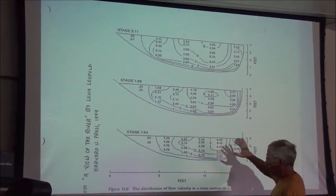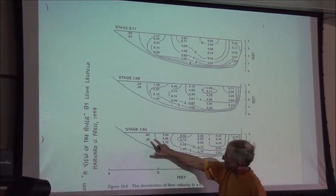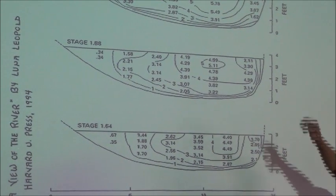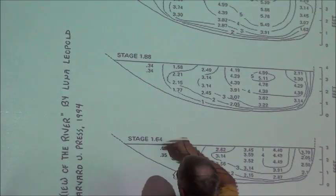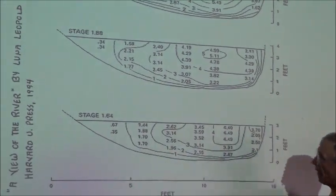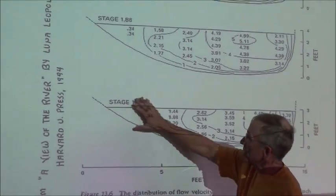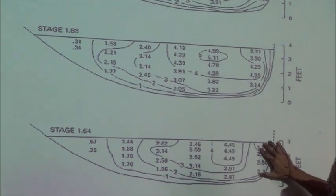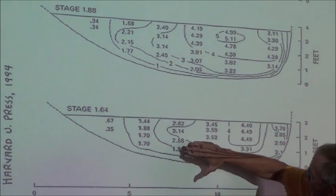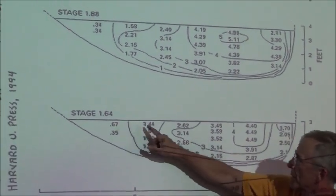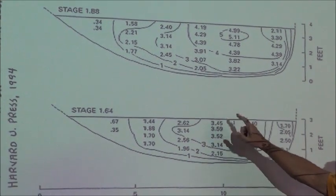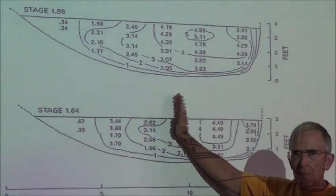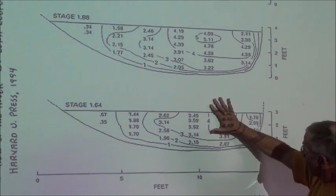You see a bunch of numbers representing water velocities actually measured in the stream at each location. There were two locations in the shallow area and more locations in the deeper parts. The numbers tend to be smaller — smaller velocities — near one bank. In the middle, going down, it goes from 0.67 to 1.44, 2.6, 3.4, 4.4, and then back down to 1.7. There's a place where the velocity is greatest, and it's not in the middle — it's actually farther towards one side.